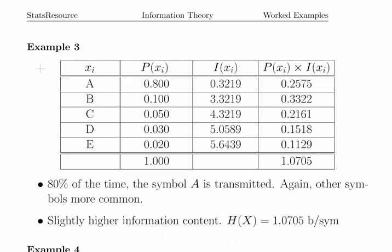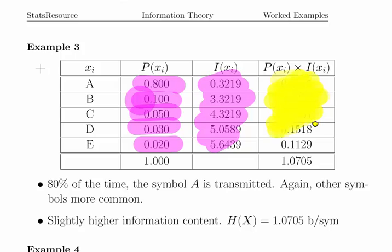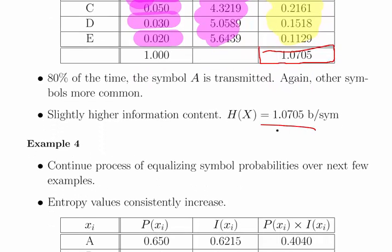I'm going to skip through these fairly quickly. Now it's 80% of the time with 10% for B, 5% for C, 3% for D and 2% for E. We calculate the corresponding information values, multiply the probabilities times the information and add them up. In this third case we get 1.0705. So that's increasing again. 80% of the time symbol A is transmitted, but other symbols are more common, so the entropy is going up.